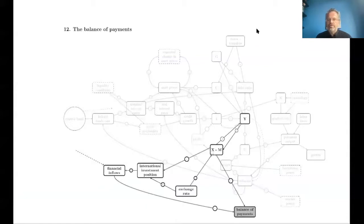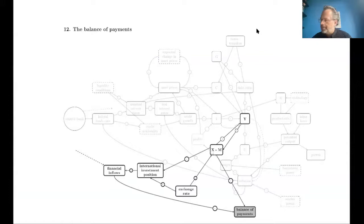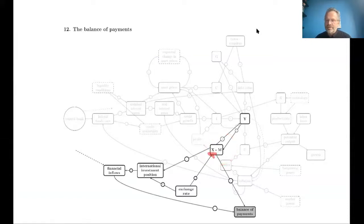Thinking about the linkages between one economy and another in the most general way, we have two sets of linkages connecting economies across borders. One is trade flows: exports, which we typically abbreviate as X, and imports, which we typically abbreviate as M. Exports are goods from this country purchased by somebody in the rest of the world, and imports are goods produced elsewhere that are purchased in this country.